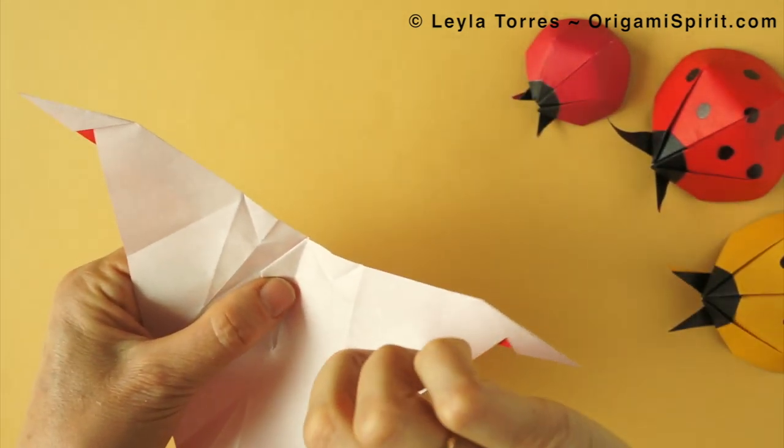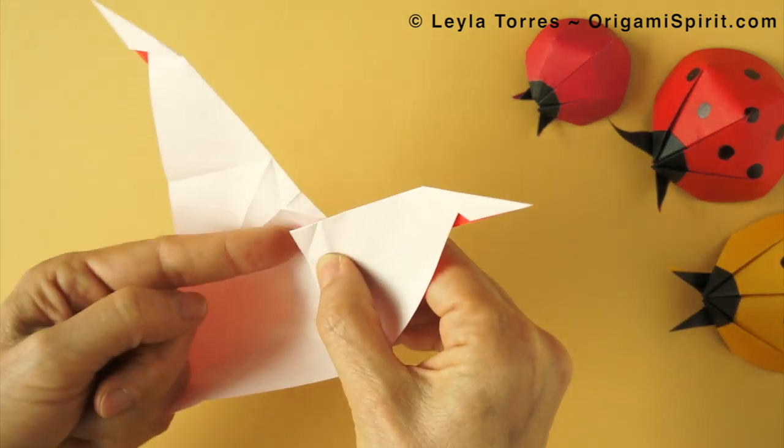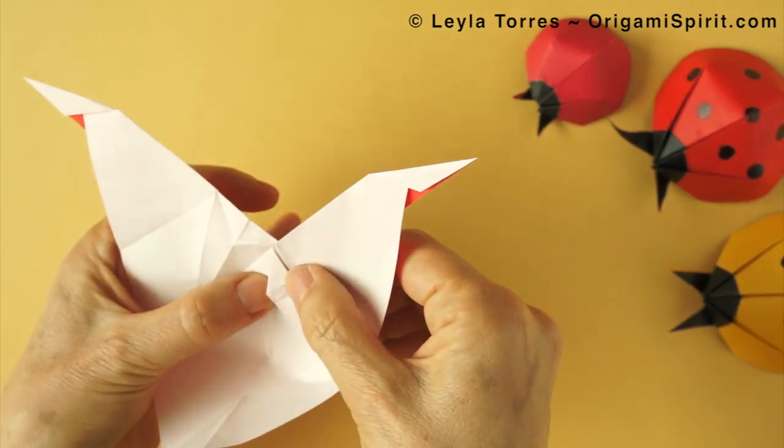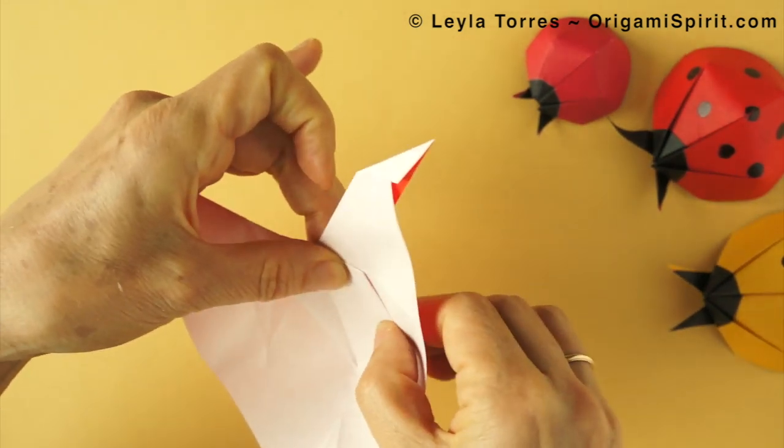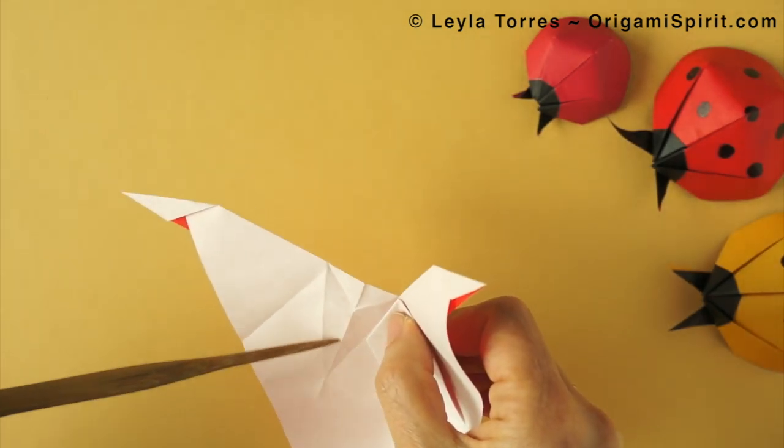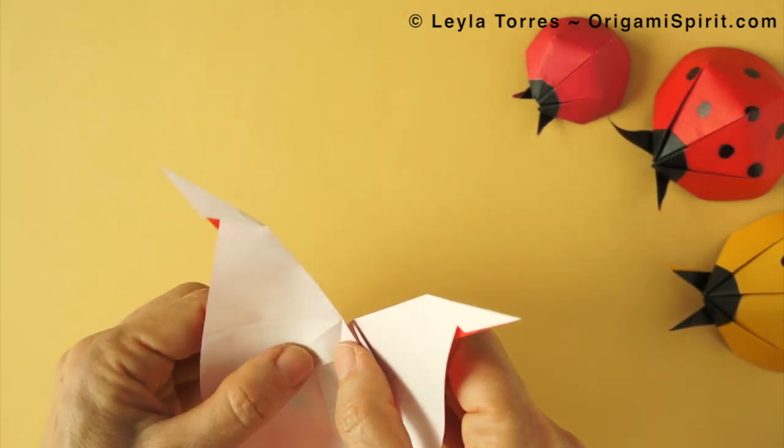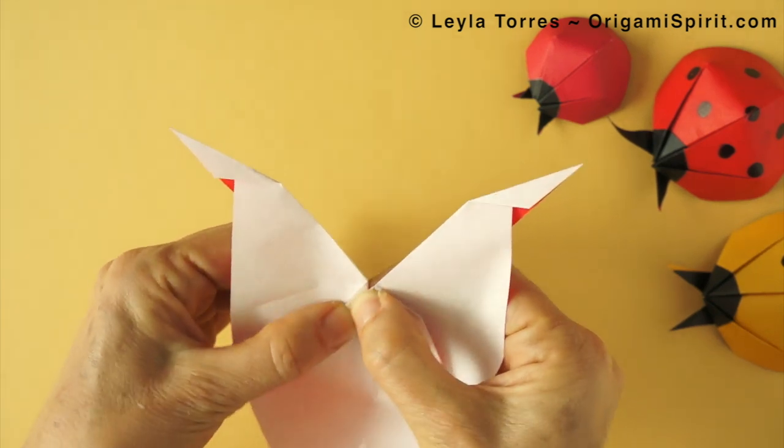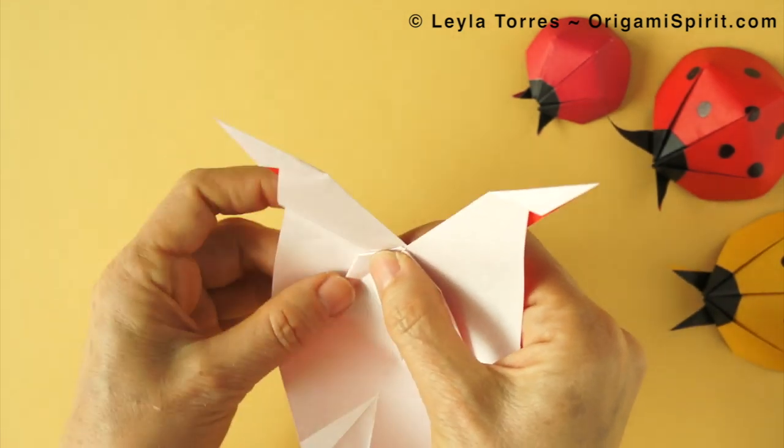We fold along this mountain fold on this small flap and we can fold all the flap over to the right. This is a mountain fold, small flap over to the left and the whole flap over to the left.